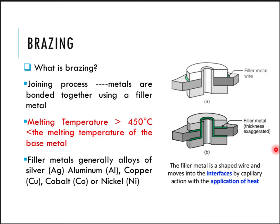A very important parameter in brazing: the melting temperature of the filler material must be more than 450°C. If it is less than 450°C, the process is classified as soldering. That is why materials with high melting points — such as silver, aluminum, copper, cobalt, and nickel-based alloys — are used, as they provide very strong joints. In a typical brazing operation, filler material is placed along the periphery of the interface, heat is applied, and capillary action fills the closely fitting spaces.